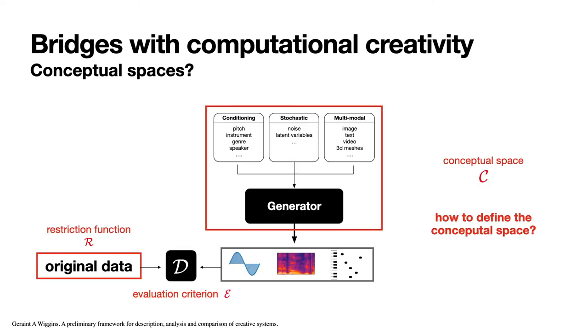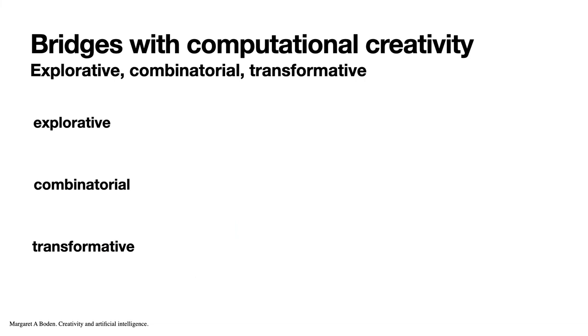In generative models, we can set our conceptual space C as being either model parameters or conditioning variables, the restriction function R as a decision function driven by the data, and the evaluation criterion as our loss. With these definitions, let's think about what could be conceptual spaces for the three Boden's types of creativity: exploratory, combinatorial, and transformative.